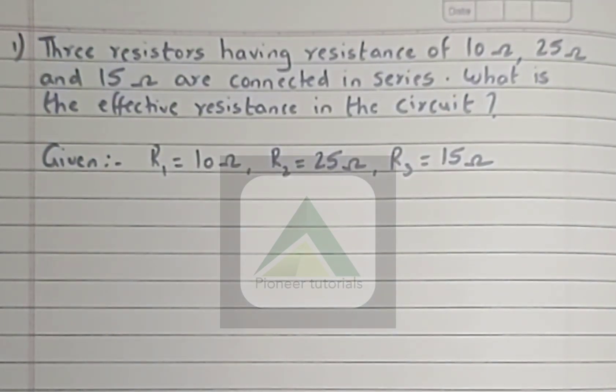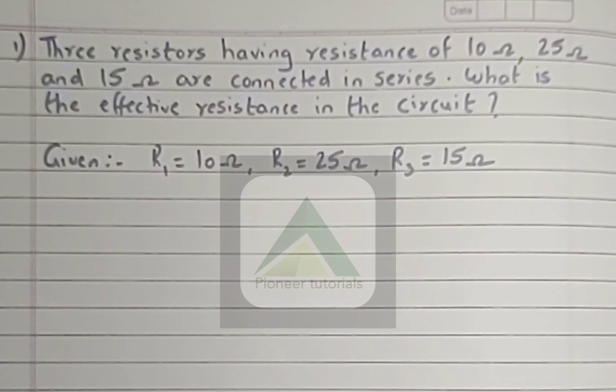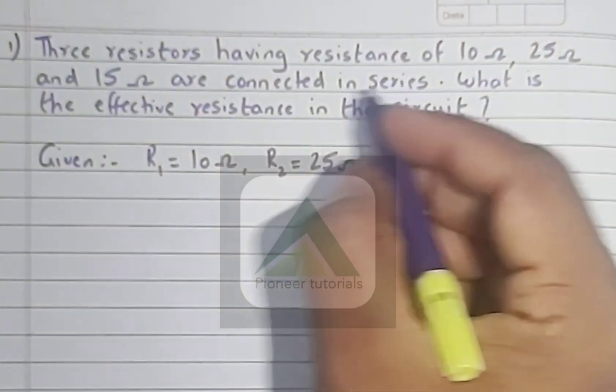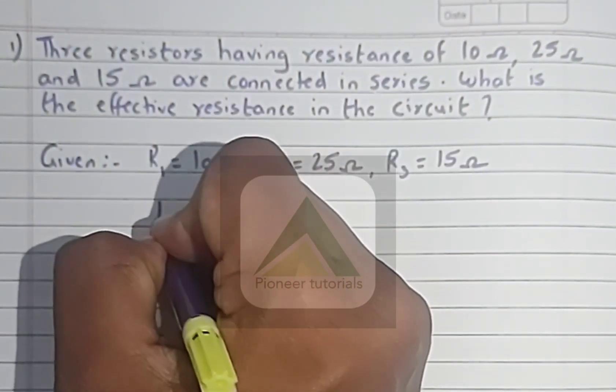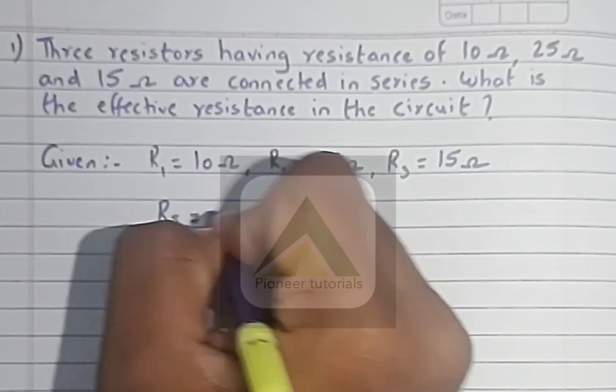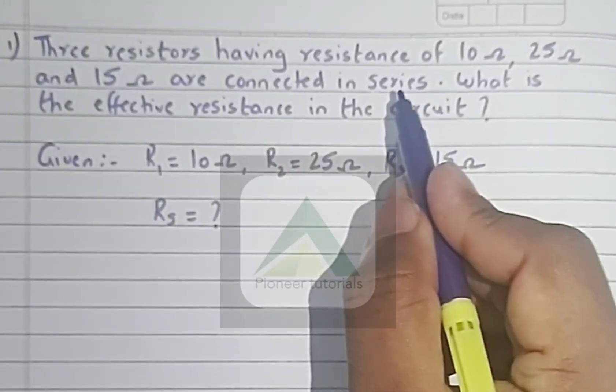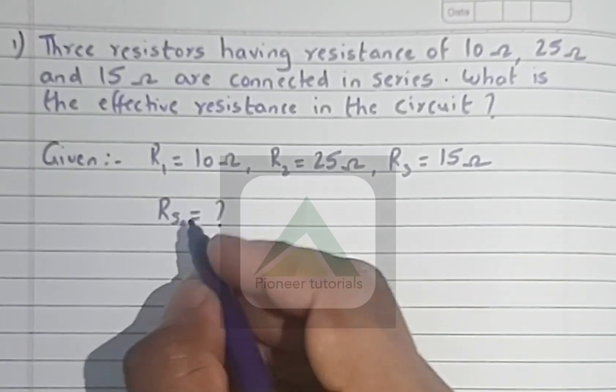And we have to find the effective resistance. Now since it's in series, we are supposed to find Rs. Dhyan rakhna hai. Rs equals question mark. If it is in parallel, we have to write Rp.